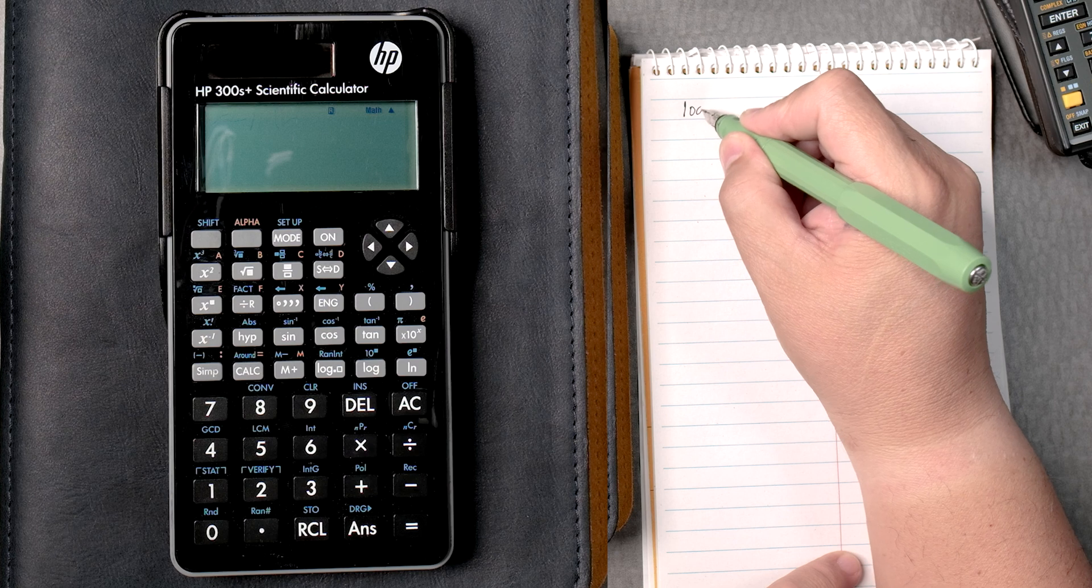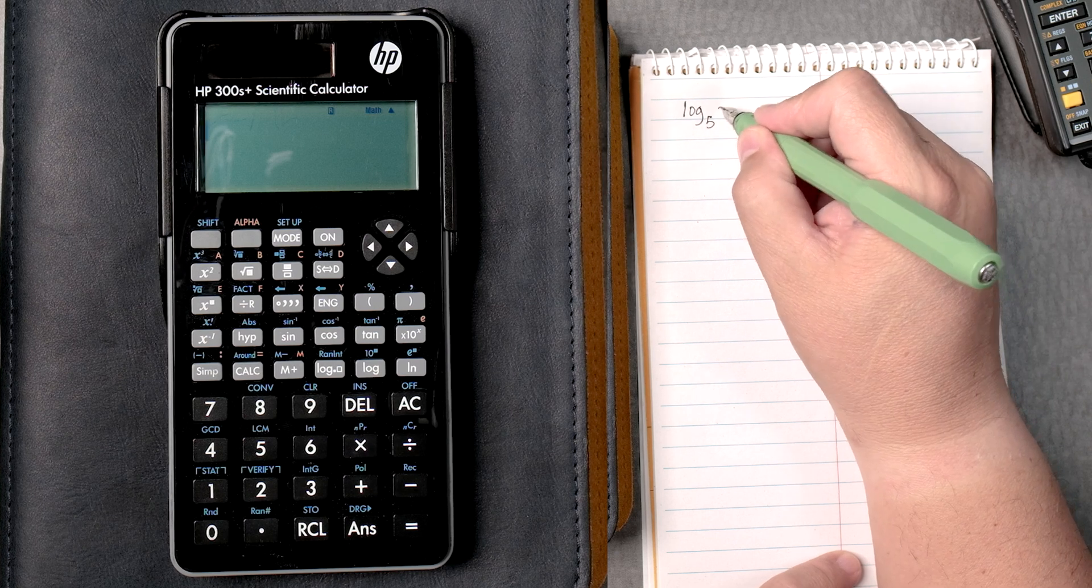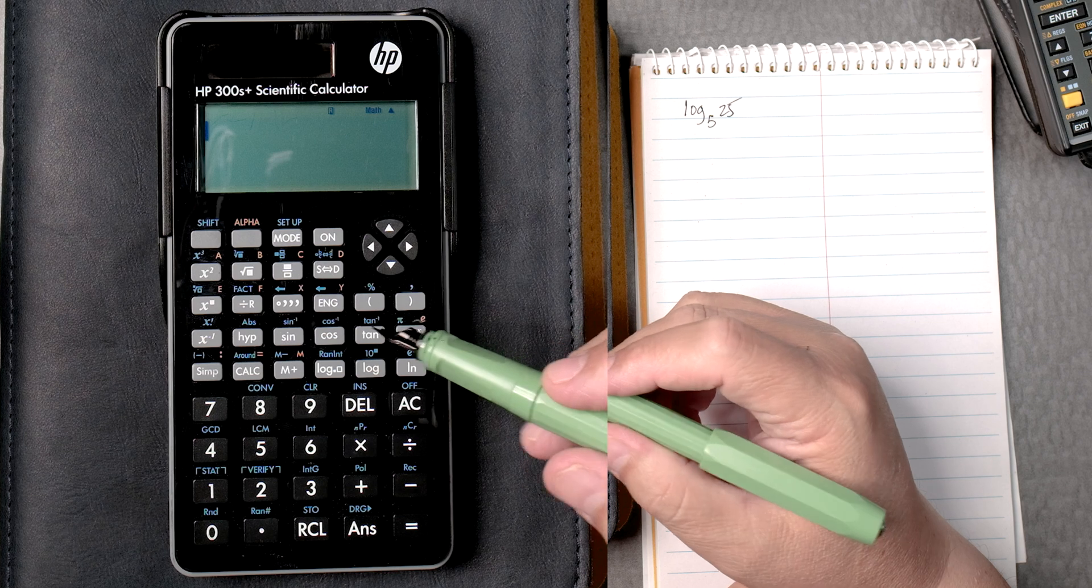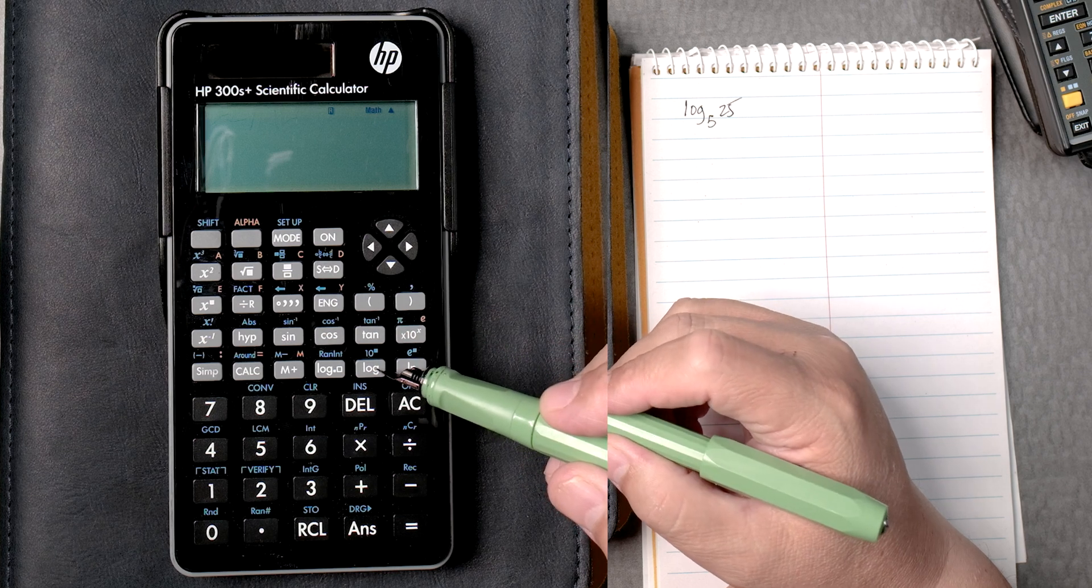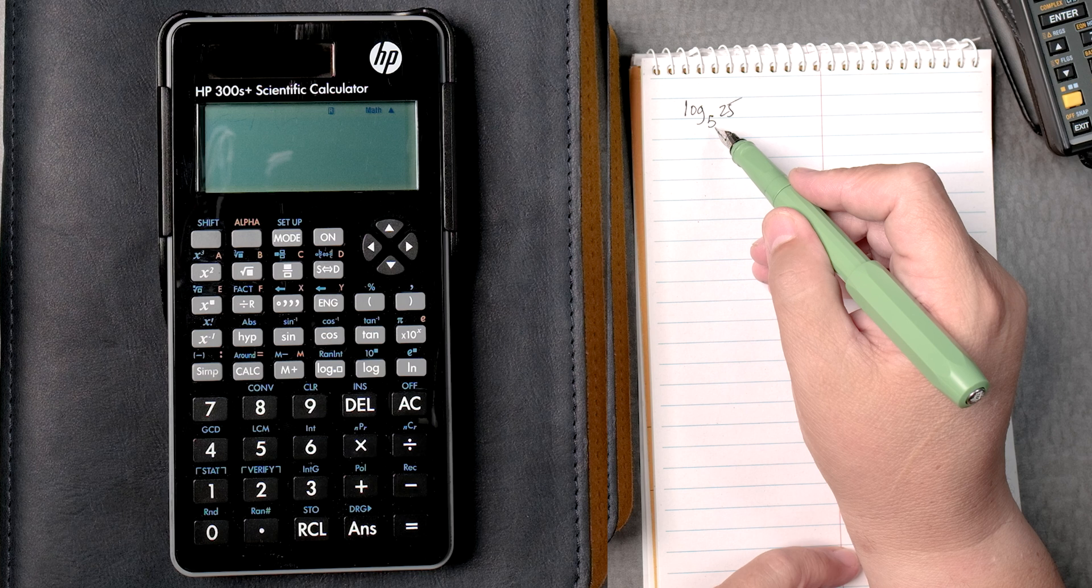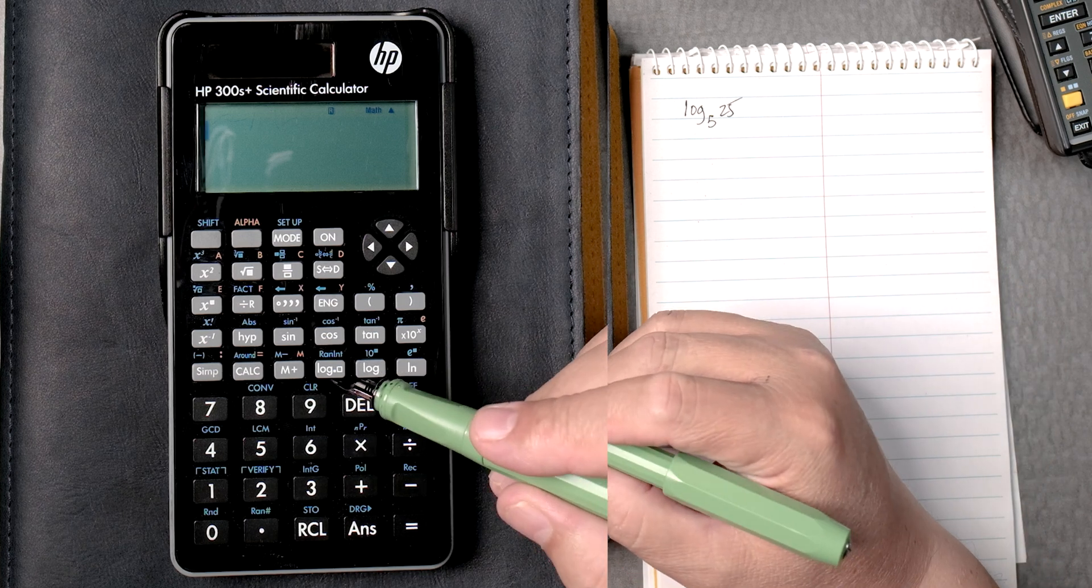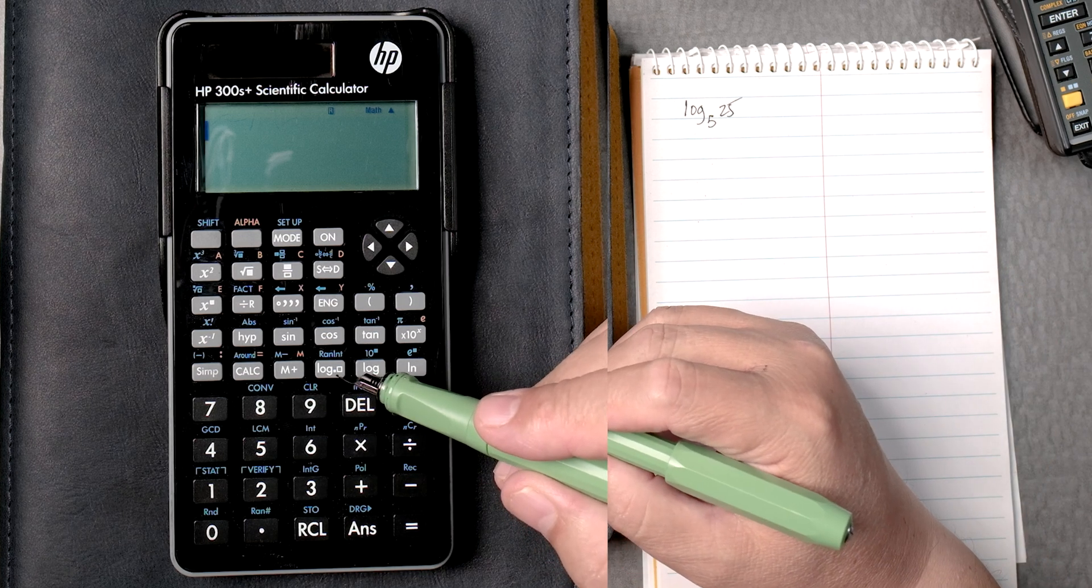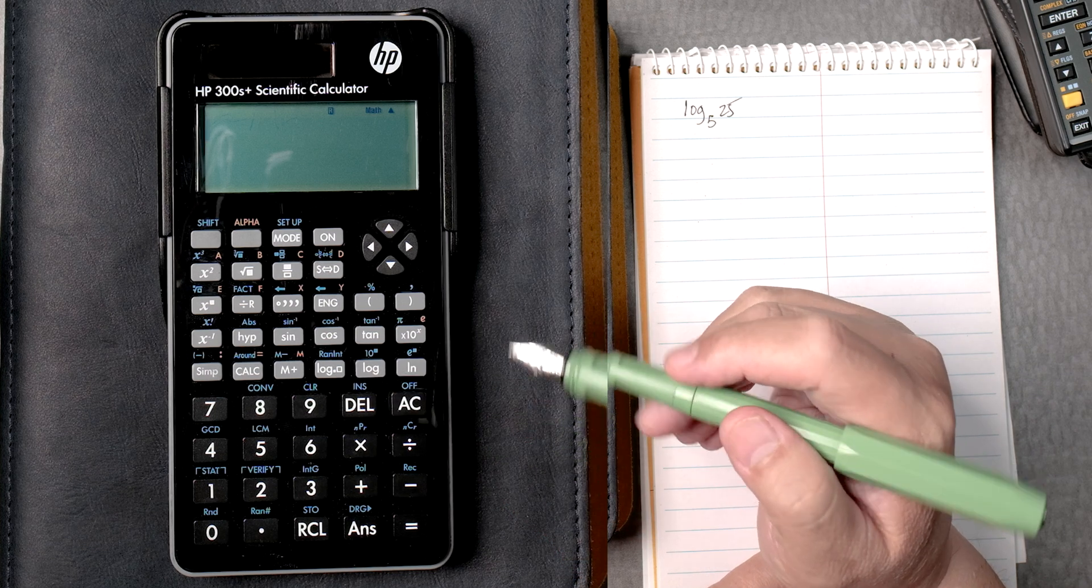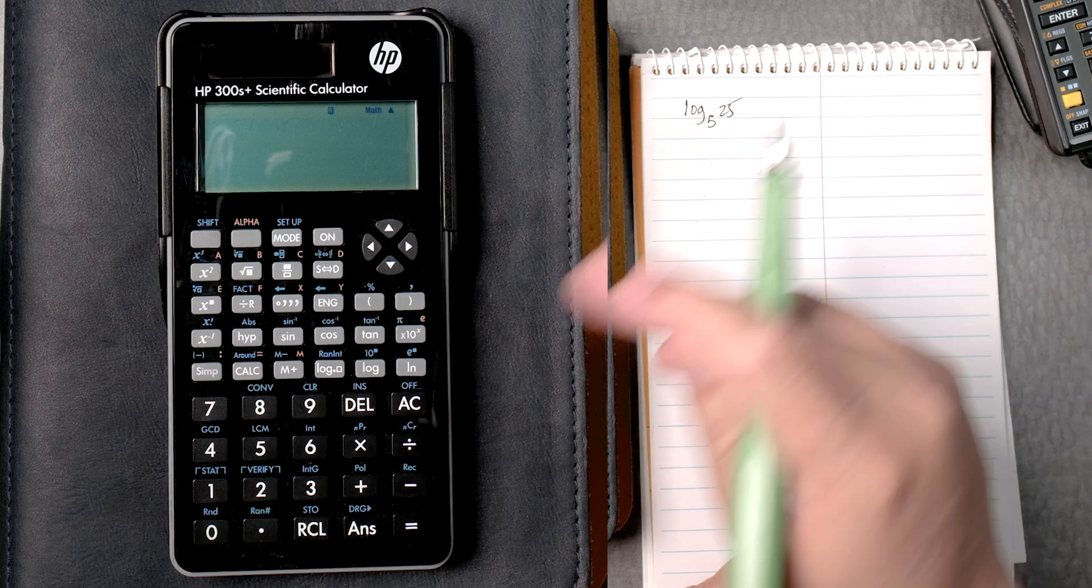So let's say you had the log of base 5, 25. Most calculators have the log button which is base 10. This one's base 5, but this calculator has a log blank space blank space for any log base. That's pretty neat. So let's calculate this.